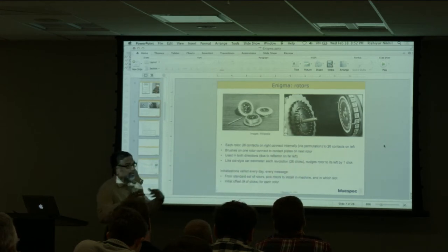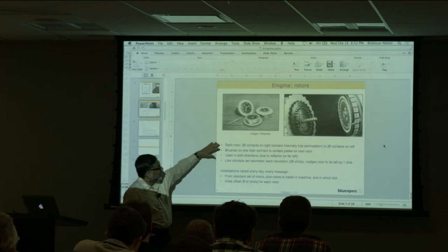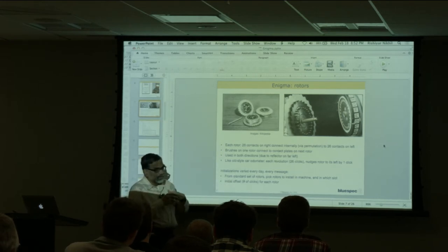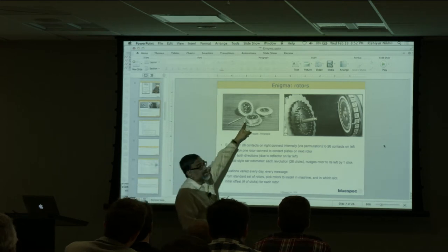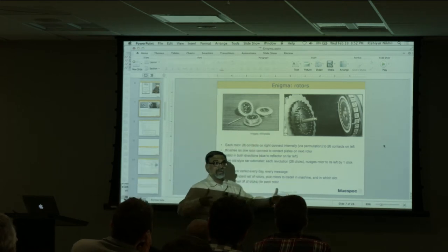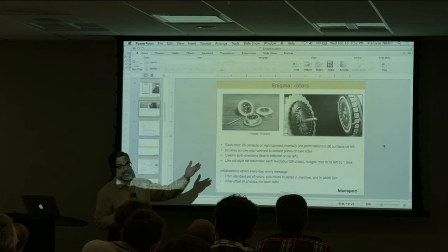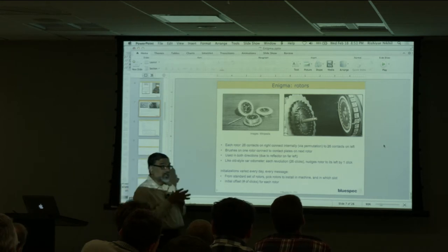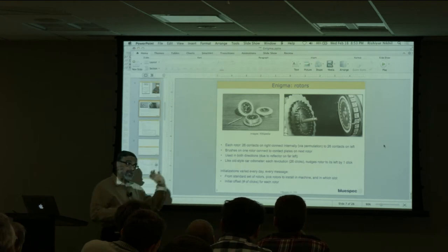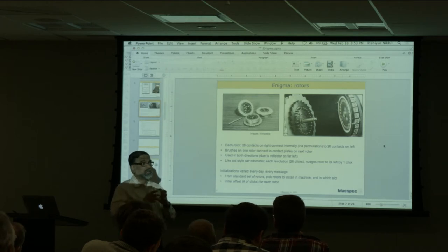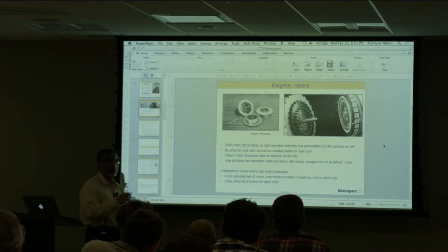After 26 clicks, like an odometer, a notch on the rotor allows the next rotor to click. The combination changes on each key press. You can also change which rotors are used — the machine comes with a box of rotors. The sender and receiver must agree in advance: which rotors to use, where to place them, which reflector to use, and what the initial position of each rotor is.